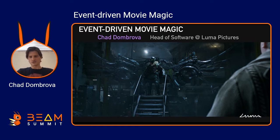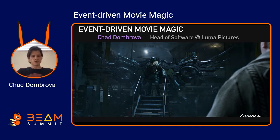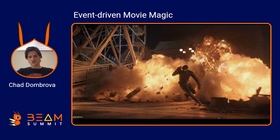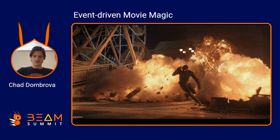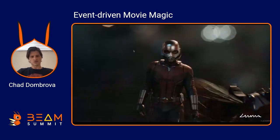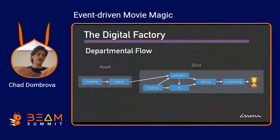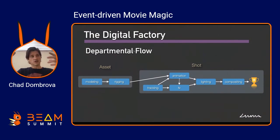We work on the largest tentpole movies alongside the juggernauts of the industry, and in order to achieve that we have a heavy focus on automation, innovation, and adopting new technologies. Beam is one of those. I'm going to walk you through how we use Beam to automate the creation of visual effects. Here's some of our work — Spider-Man: Far from Home and Ant-Man — completely computer-generated images.